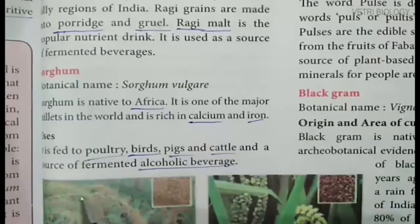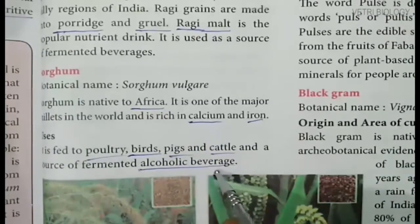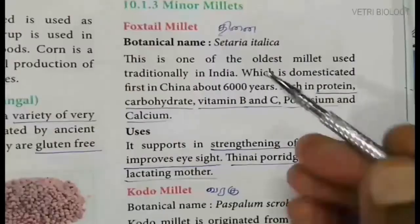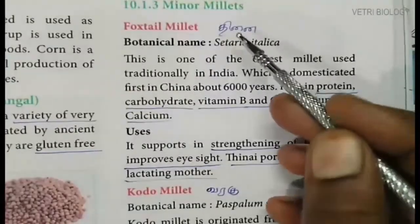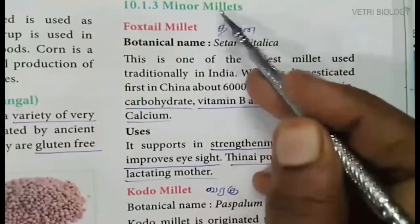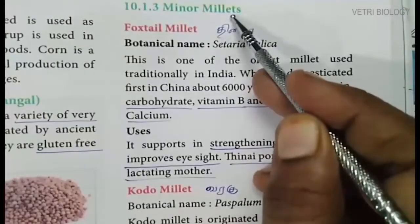Sorghum is also a source of fermented alcoholic beverage. Minor millets are very small cereals.